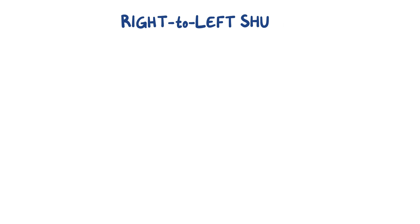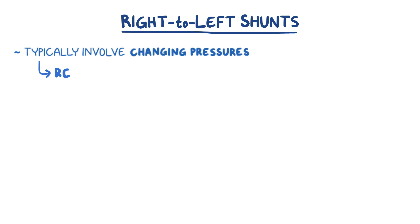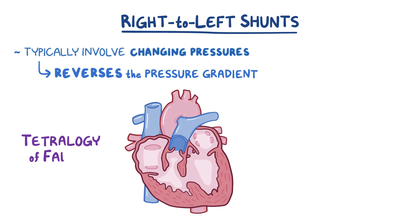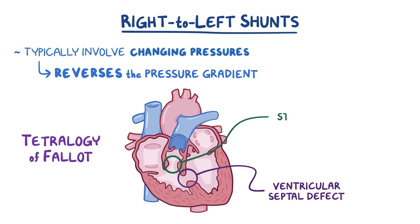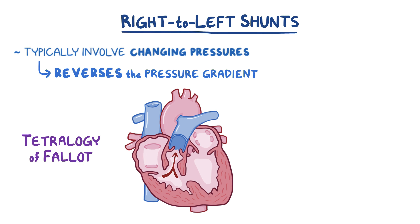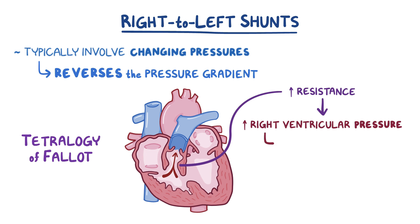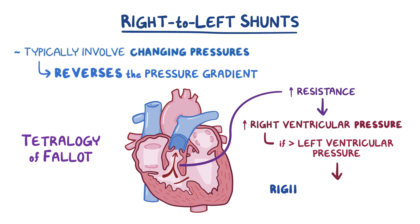On the flip side, in a right-to-left shunt, blood flows from the right side of the heart to the left. Normally this wouldn't happen because blood would not want to flow up its pressure gradient, but right-to-left shunts typically involve changing pressures in the chamber of the heart which reverses the gradient. For example, in the congenital heart condition called Tetralogy of Fallot, there's a large ventricular septal defect and stenosis, or narrowing, of the right ventricular outflow tract into the pulmonary artery. The right ventricular outflow tract stenosis increases the resistance to blood going into the pulmonary circulation and that increases right ventricular pressure. If the right ventricular pressure exceeds left ventricular pressure, then blood can flow down the new pressure gradient and a right-to-left shunt happens.